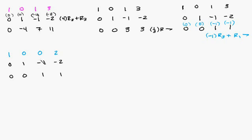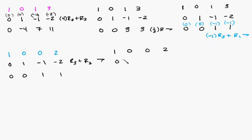Now we want to get a 0 here. We can add row 3 plus row 2. Copy everything else down: 1, 0, 0, 2. Then 0 plus 0 is 0, 0 plus 1 is 1, 1 plus negative 1 is 0, 1 plus negative 2 is negative 1. And copy everything else down: 0, 0, 1, 1.